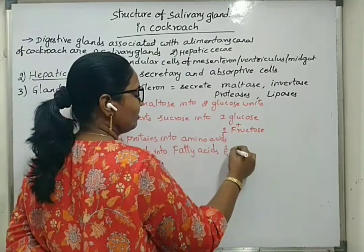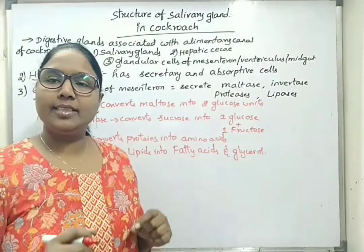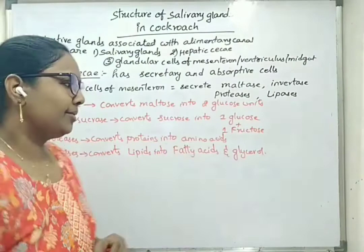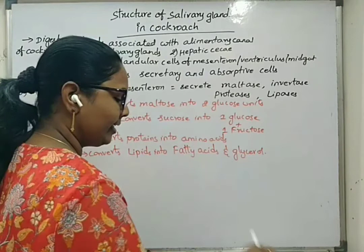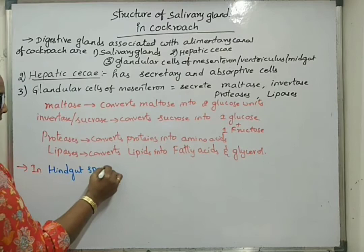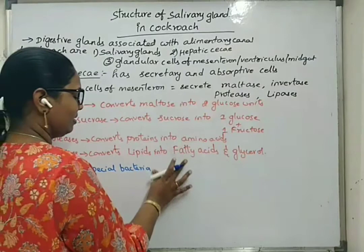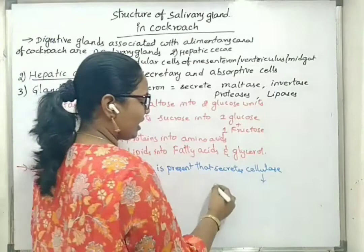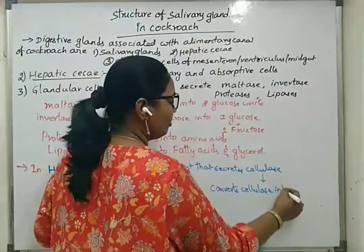Apart from that, in the hindgut there is normal bacterial flora. Some of these bacteria secrete cellulase, and this cellulase digests the cellulose present in the food material. So in the hindgut, special bacteria are present that secrete cellulase, which converts cellulose into glucose units.